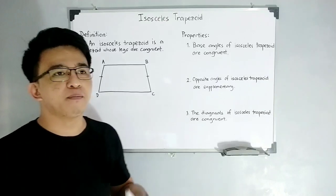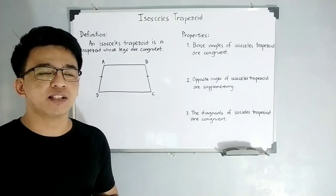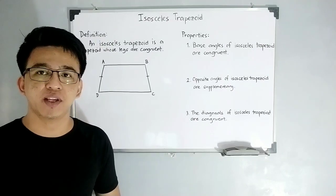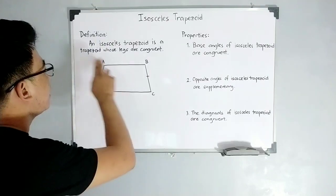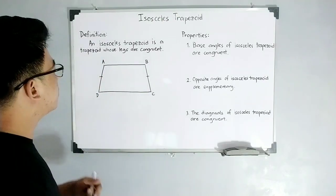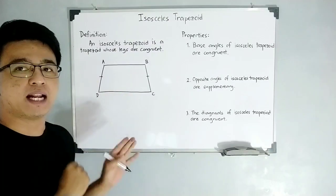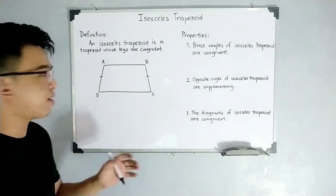Isosceles trapezoid or an isosceles trapezoid is a trapezoid whose legs are congruent. This is one of the important definitions or properties. That's why it's called a special trapezoid. So again, this one is a trapezoid whose legs are congruent. First, where are the opposite parallel sides to say it's a trapezoid?